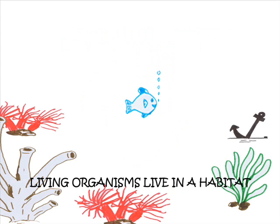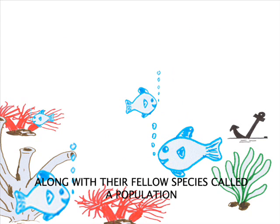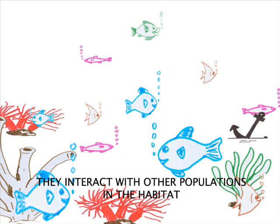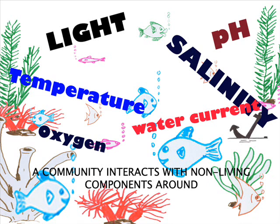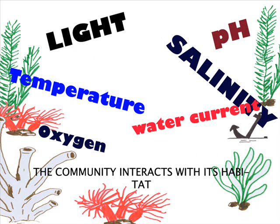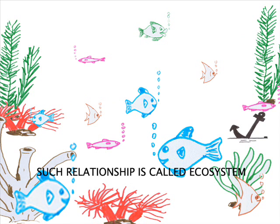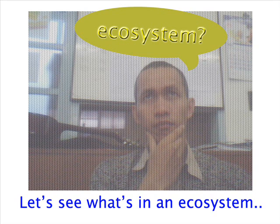Living organisms live in the habitat, along with their fellow species called a population. They interact with other populations in the habitat, a collection of populations called a community. The community interacts with non-living components around it — the community interacts with its habitat. Such a relationship is called an ecosystem. Let's see what's in the ecosystem.